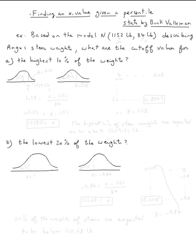The topic is finding an x value given a percentile. This problem is kind of like going backwards — you have the percentile, which means a percentage, and then you need to find the z value, and then you find the x value. So we're going backwards.